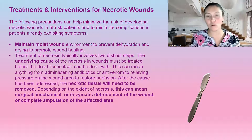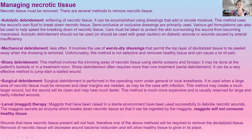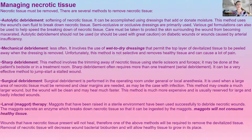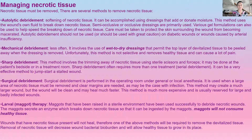So I'll go over all the different methods of managing the necrotic tissue through debridement. First, autolytic debridement — this is the softening of the necrotic tissue. We accomplish this by using dressings that either add or donate moisture to the wound. This also uses the wound's own fluid to break down the necrotic tissue. Semi-occlusive or occlusive dressings are primarily used for this.